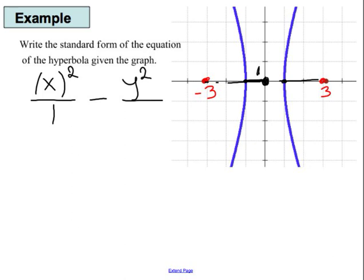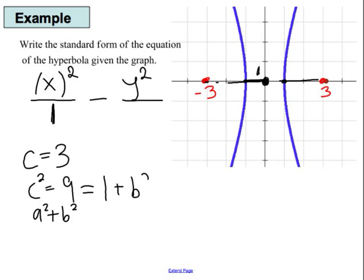But the other thing that I know is c. I know c is 3. So that means c squared is 9. And I know c squared is always a squared plus b squared. a in our case is 1 because we know that distance. But we do not know b squared.